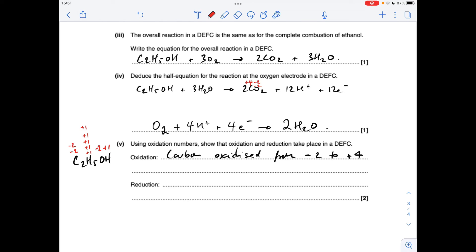The reduction one's a lot easier. So oxygen starts out at zero because it's an element and it goes to minus two. So that's the reduction process there.